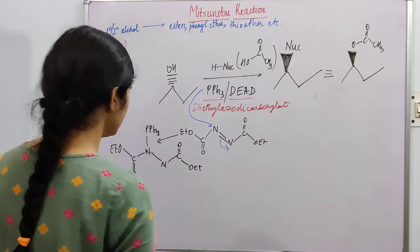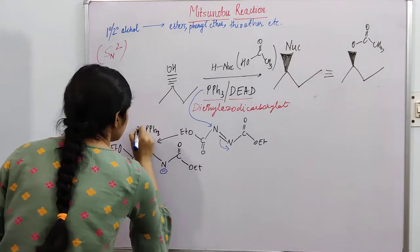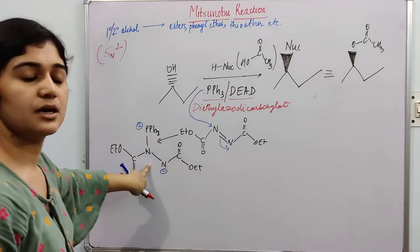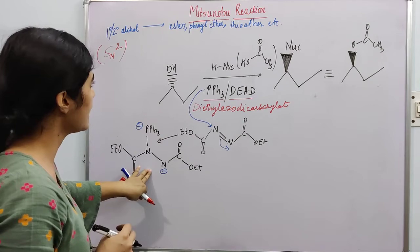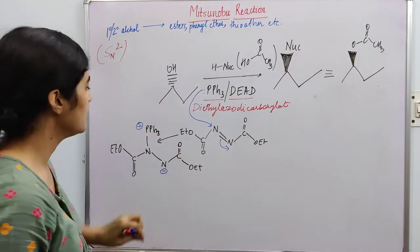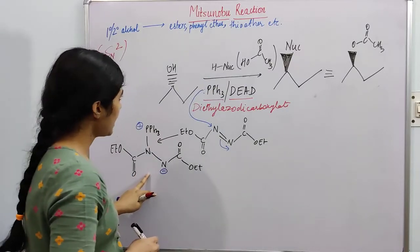It will have charges. This nitrogen will have a negative charge, this phosphorus will have a positive charge. Now what happens, this zwitterion plays a very important role in this reaction. This zwitterion will facilitate the removal of proton from the nucleophile.